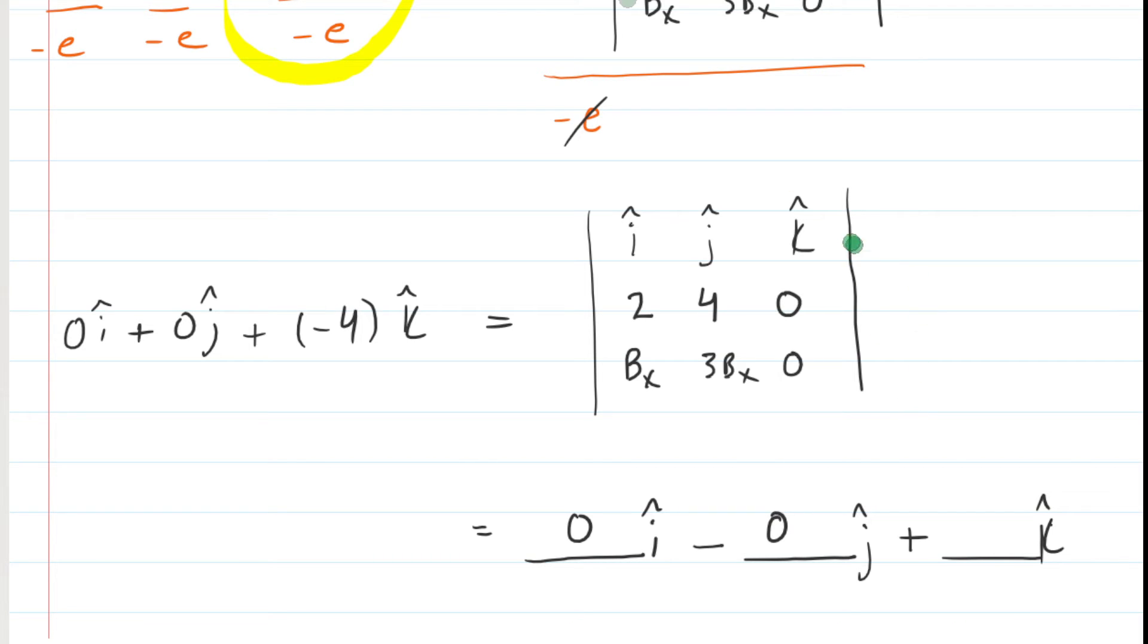But now for the k-hat column, it gets more interesting. We cover up that k-hat column. We cross-multiply. So we're going to do 2 times 3bx, which is 6bx. And then we're going to cross-multiply this way. 4 times bx is 4bx. It's a little crowded here, but hopefully you can see that. And then you subtract those outcomes. So you subtract 6bx and 4bx, and you get 2bx.